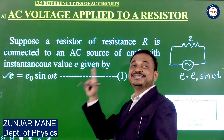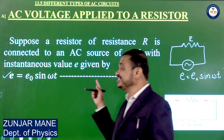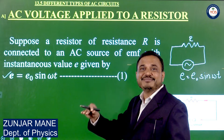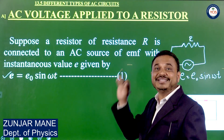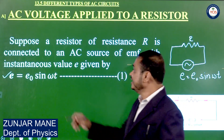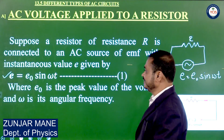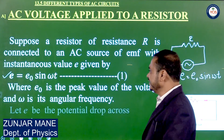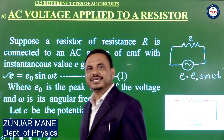In case of DC, the voltage is constant. But in case of AC applied to a resistor, the voltage is not constant — it varies between the minimum, maximum, and zero values. The instantaneous value at any instant T is given by equation 1: E = E0 sin omega T, where E0 is the peak value of EMF and omega is its angular frequency. Let E0 sin omega T be the potential drop across the resistance.